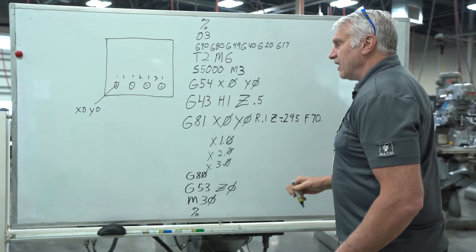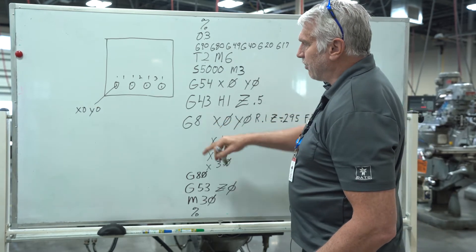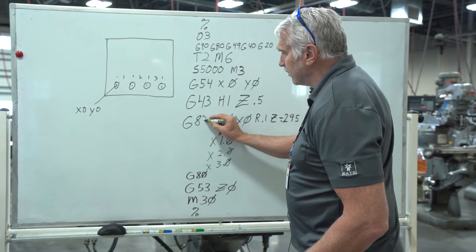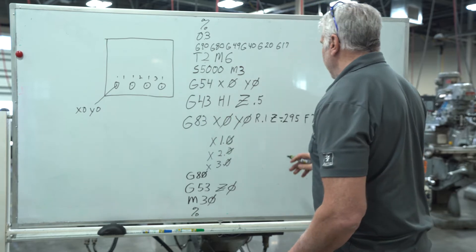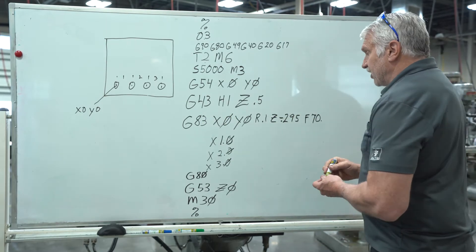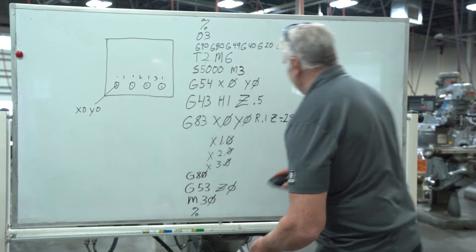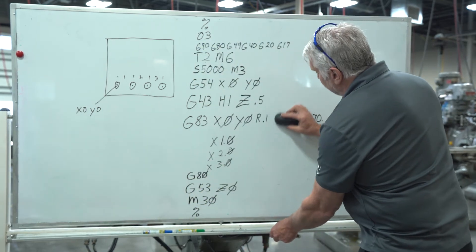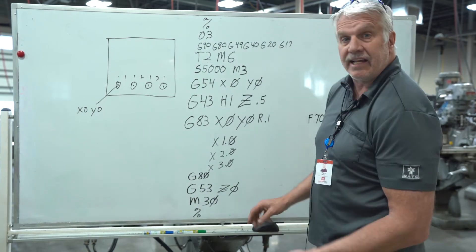And all I'm changing instead of a spot drill, I'm pecking. So a G83. Everything remains here the same except the Z depth. We're going to go one inch deep but we need to tell it how much we need to peck each time.